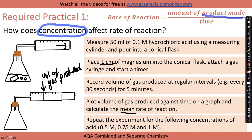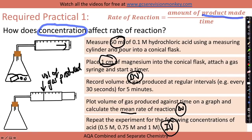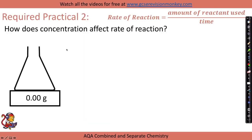Repeat the experiment for different concentrations of acid — this is your independent variable. The dependent variable is the volume of gas produced, which you convert to a rate of reaction. Important control variables include the volume of acid, the length of magnesium, and temperature. As good practice, repeat the experiment three times for each concentration and calculate a mean.